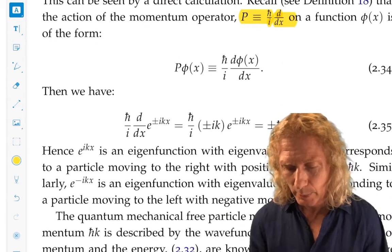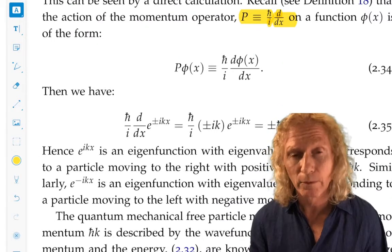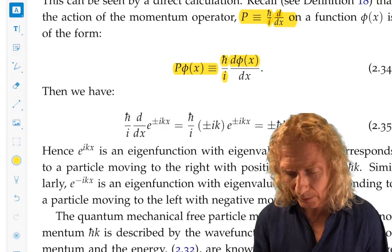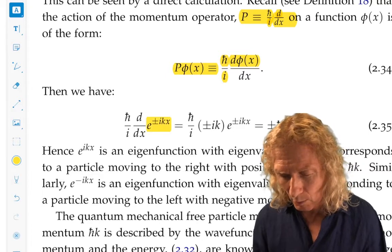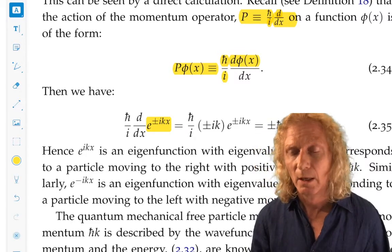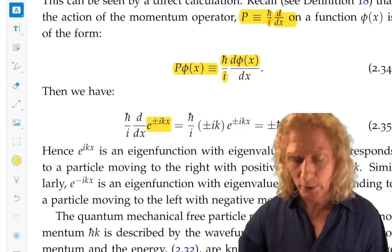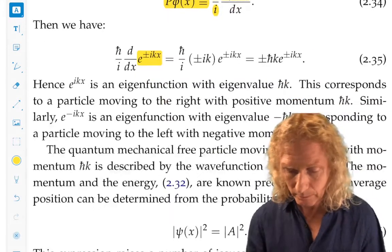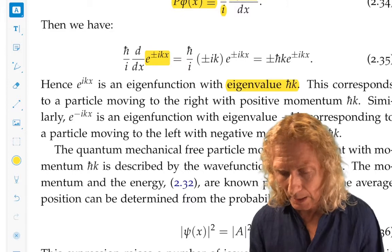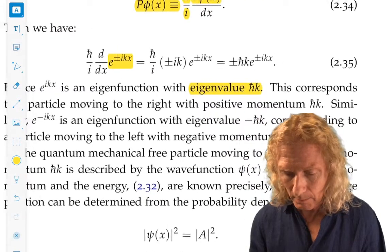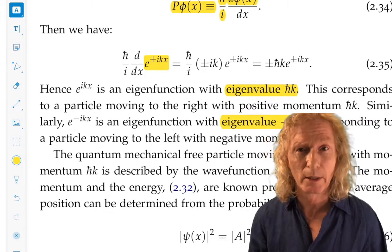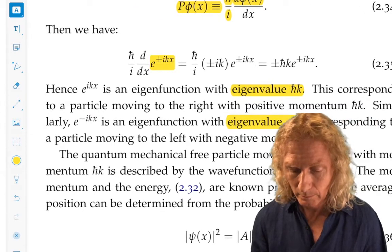Let P act on phi of x, and if you let it act on e to the plus or minus ikx, what you end up getting is plus or minus h-bar k e to the plus or minus ikx. So you get a constant times the same function. It's an eigenfunction. So e to the ikx is an eigenfunction with eigenvalue h-bar k, and e to the minus ikx is an eigenfunction with eigenvalue minus h-bar k.